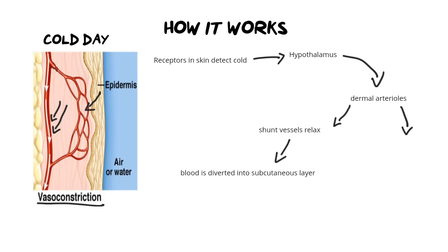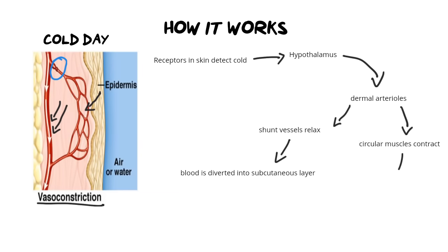On the other side, the other set of dermal arterioles have circular muscles in them, and we need to constrict those muscles to stop blood from flowing to the surface. Those circular muscles are located right where the shunt vessels and the rest of the dermal arterioles connect with one another. We contract that muscle and it closes off blood flowing to the surface of the skin. So less blood reaches the surface, meaning less heat is lost — and that's also why you can look bluish or pale when you're cold, because less oxygenated blood is getting to the surface.